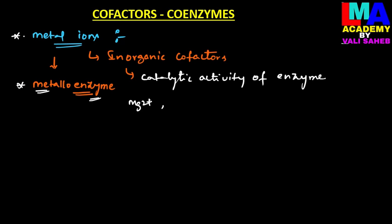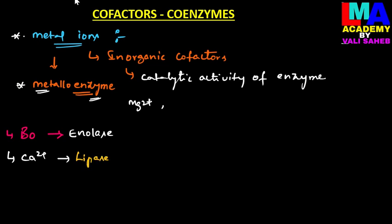Examples of metal ion cofactors: boron acts as a cofactor for the enzyme enolase, enhancing its catalytic activity. Calcium (Ca²⁺) increases the catalytic activity of lipase and succinate dehydrogenase. These two enzymes increase their catalytic activity when associated with the cofactor calcium.